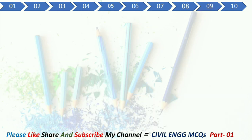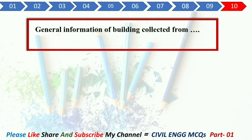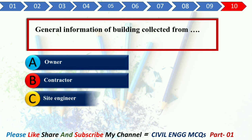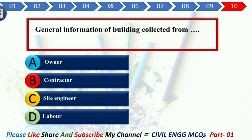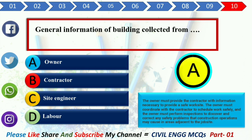Q10. General information of a building is collected from dash. Option A: Owner. Option B: Contractor. Option C: Site Engineer. Option D: Labor. Your correct answer is Option A: Owner. Explanation: The owner must provide the contractor with information necessary to provide a safe work site. The owner must coordinate with the contractor to schedule work safely, and must perform inspections to discover and correct any safety problems that construction operations may cause in areas adjacent to the job site.